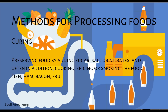Curing — preserving food by adding sugar, salt or nitrates, and often also cooking, spicing or smoking the food. Examples include fish, ham, bacon and fruit.